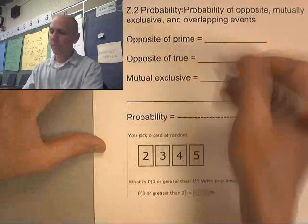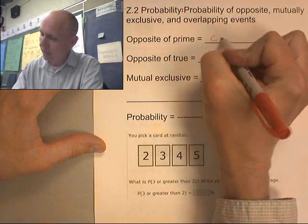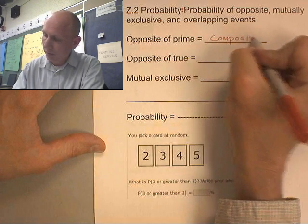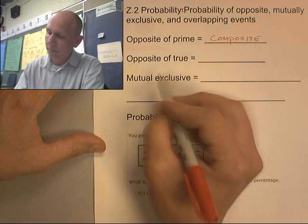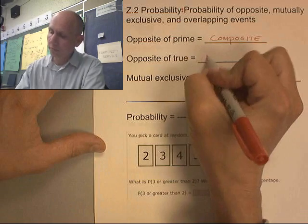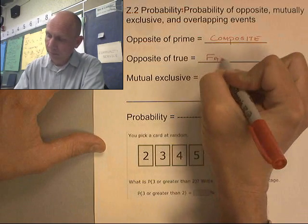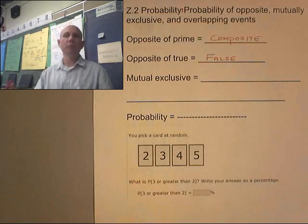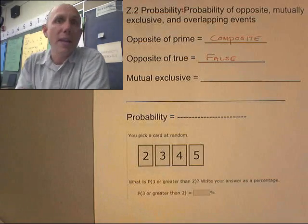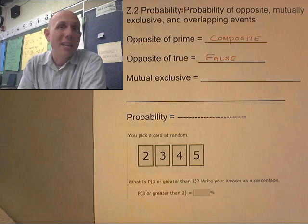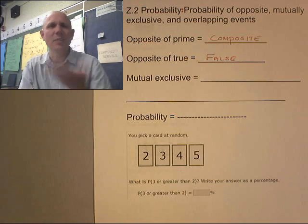The opposite: what's the opposite of a prime number? Composite. What's the opposite of true? False. What's the opposite of hot? Cold. What's the opposite of wet? Dry. What's the opposite of sunny? Rainy.